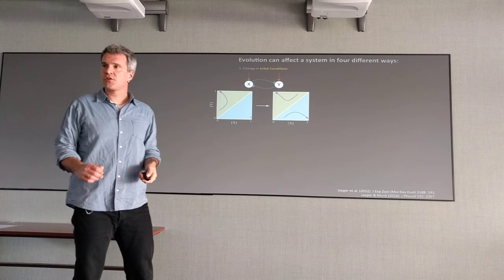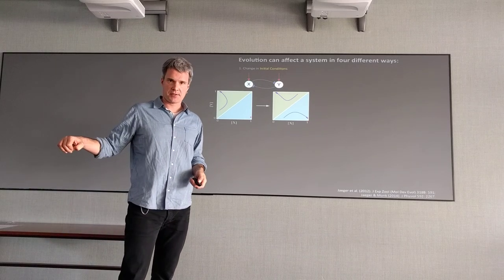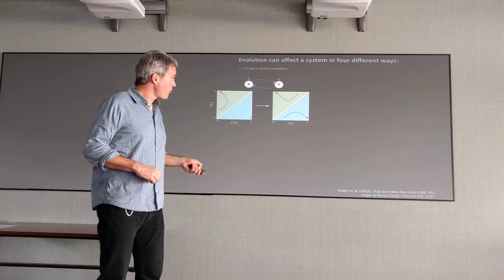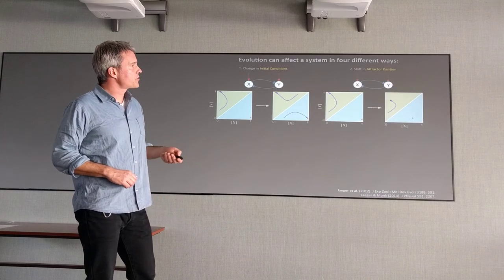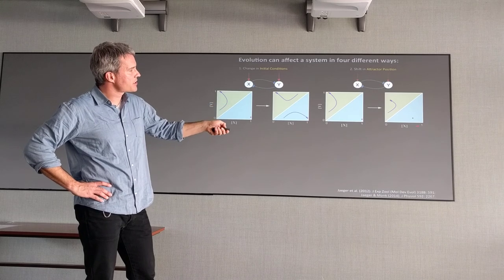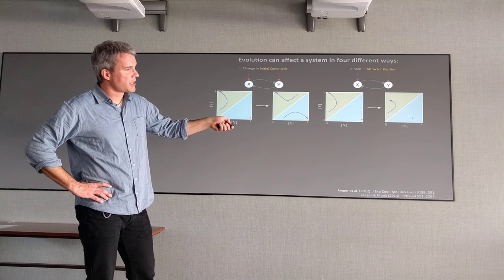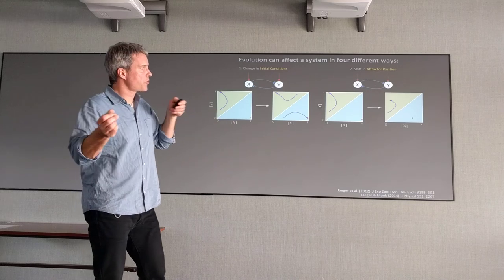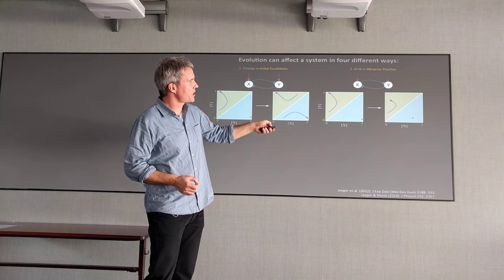You get evolutionary change by changing the initial conditions of development. The second opportunity is that you change the strength of these interactions, and that changes smoothly the position of the attractor. So the attractors move but you don't get any big qualitative changes.